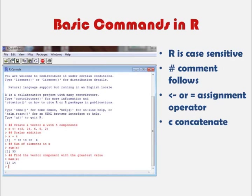What we want to do here is create a vector with five components. I've created an arrow here, and we can use an arrow or an equal sign as an assignment operator. We're telling R that X is going to be a vector, where C is used to concatenate, followed by our five vector components.